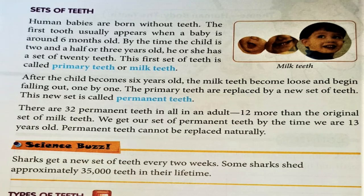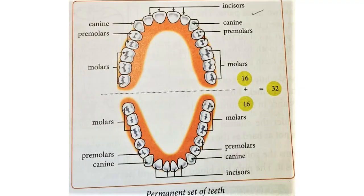So what have we learnt? When you were very small, you had a set of 20 primary teeth or milk teeth. And as you are growing, you are going to have a set of 32 permanent teeth. The primary or temporary teeth are replaced naturally by the permanent teeth. But the permanent teeth are never replaced naturally. Now we will move to the second topic: types of teeth and their position.